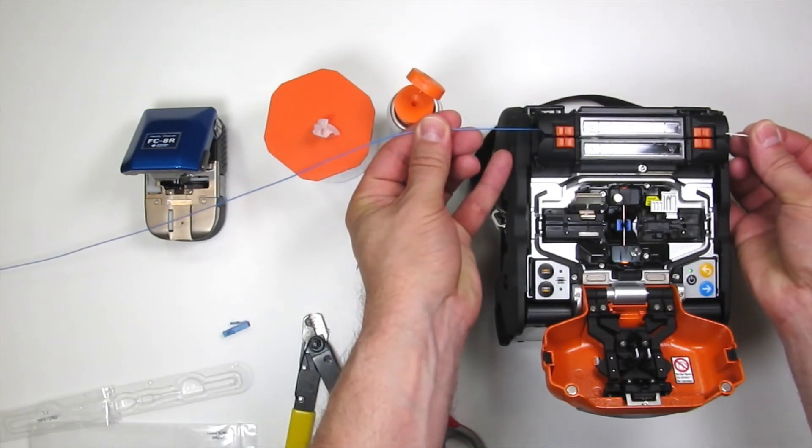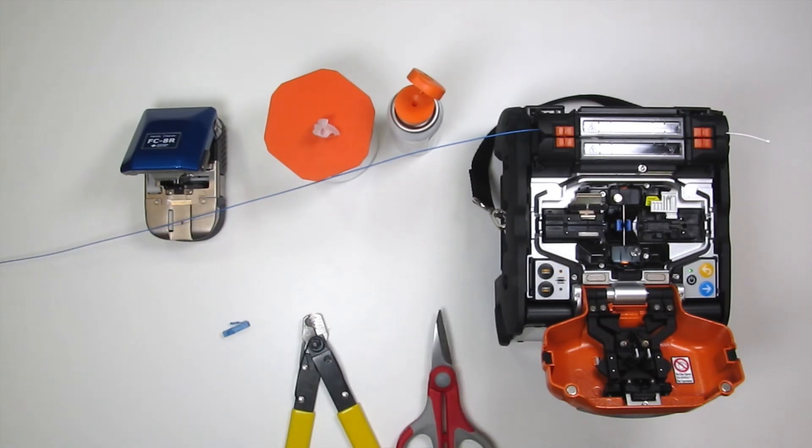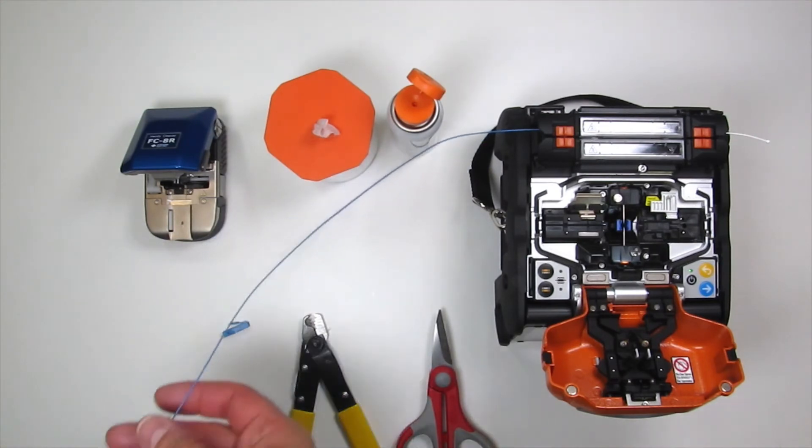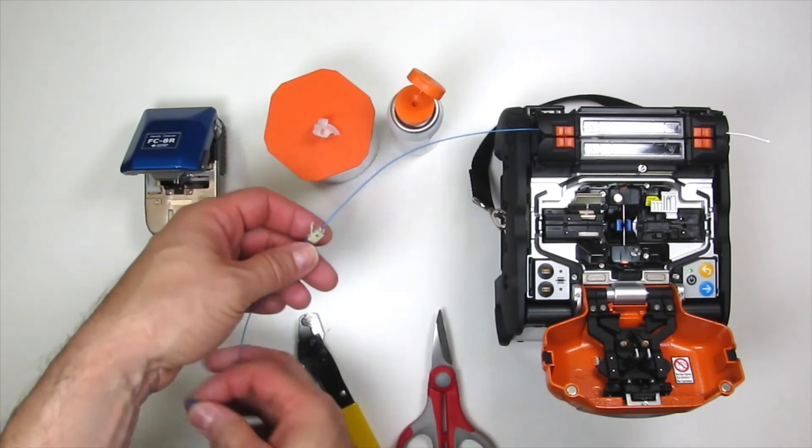Place the assembly in the heater. Right side first, then left. Keep tension on the splice. Make sure the protective tube does not move. Start the heater program.